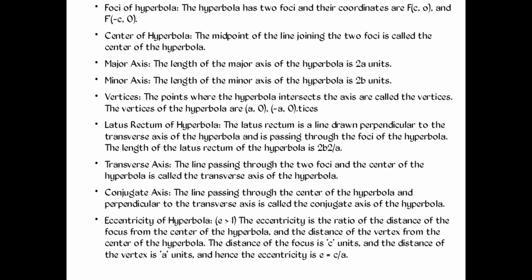The length of the minor axis of the hyperbola is 2b units. Next, the points where the hyperbola intersects the axis are called the vertices. The vertices of the hyperbola are at (a, 0) and (−a, 0).